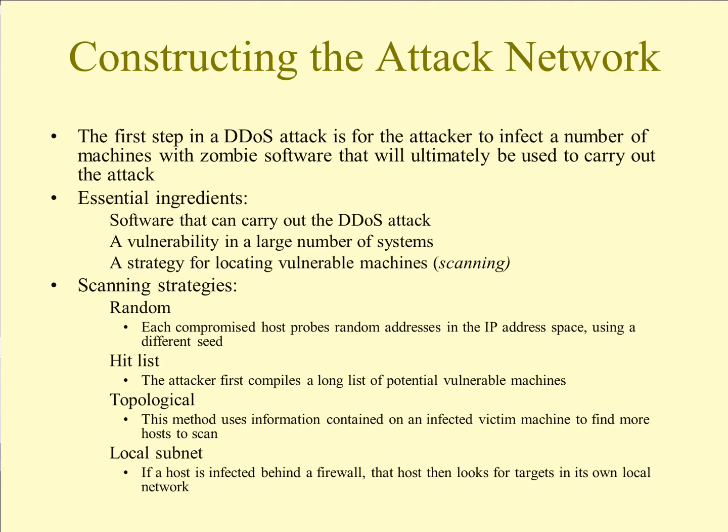The last strategy is the local subnet. If we're behind a firewall, this one is often going to be used so that we're looking for hosts within the local network. This is often an easier strategy because the computer performing the attack may already be trusted within the network. That's why it's so important that all users on a network are conscious about the potential for attacks and don't open executables from computers or people they cannot trust.